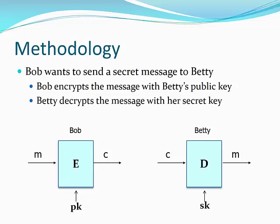If you have two people who want to communicate with each other — we'll use Bob and Betty for this example — and Bob wants to send a message to Betty, but it's a secret, so he doesn't want anyone else to see it. With public key cryptography, Bob can download a copy of Betty's public key, encrypt his message using that key, and then send the message to Betty in an encrypted state. This will protect the message in transit, and if anyone is able to get a copy of the message, they will not be able to read it.